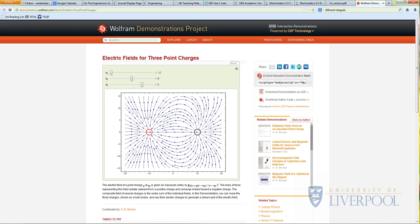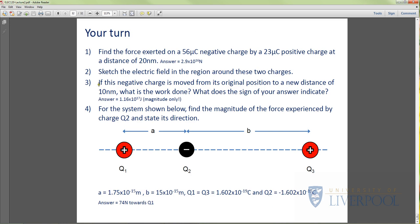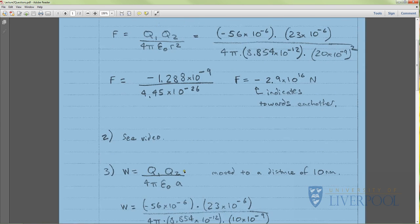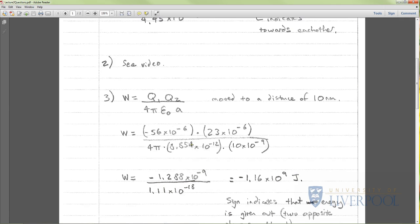Question three is about work. If the negative charge is moved from its original position to a new distance of 10 nanometers, what is the work done and what does the sign indicate? This is actually incorrect—well done to everyone who spotted that. Here is the correct solution. The trick is we're not interested in where the charge started. We've got the expression for work, and we know q1 and q2. What's going on now is we've got this value of a—it's no longer r squared, it's now a.